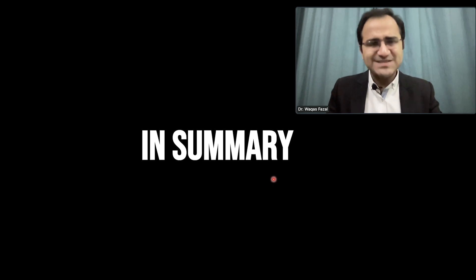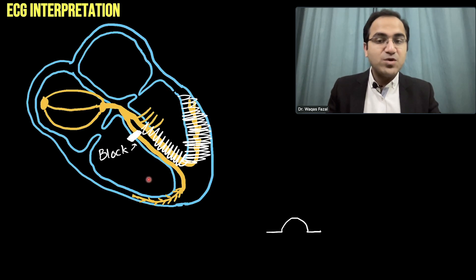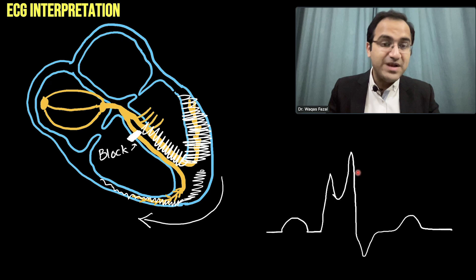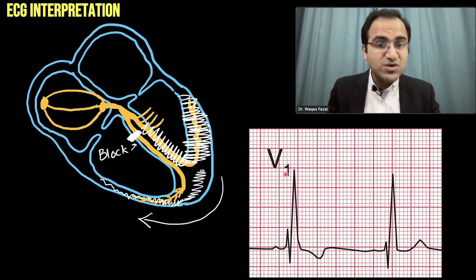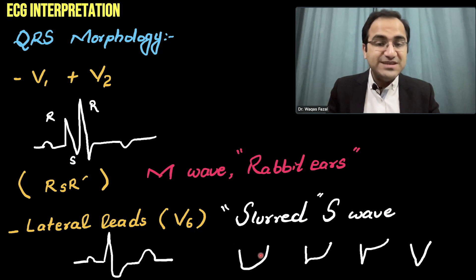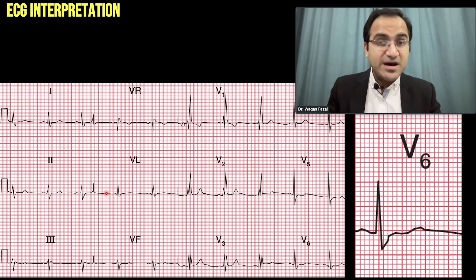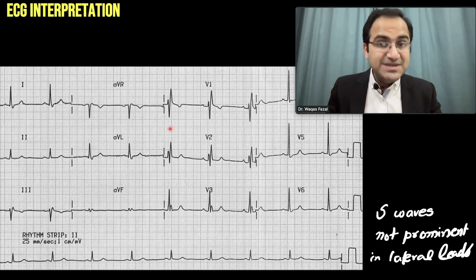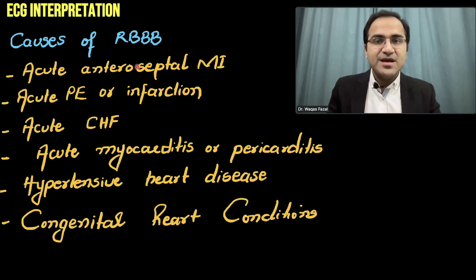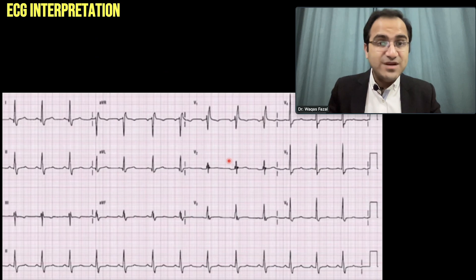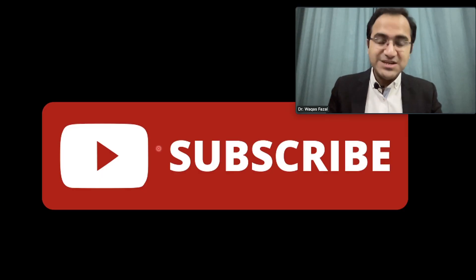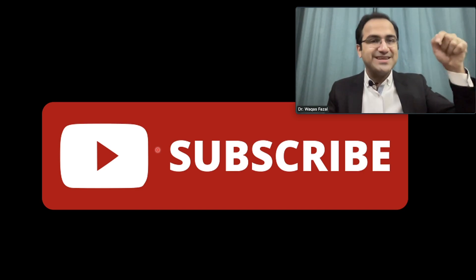Before going into the summary, if you liked my video please click the subscribe button and make sure to check out my other videos on ECG interpretation. In summary, we talked about what bundle branch block is, how the QRS complex forms an M wave, the appearance of the M wave in V1 and slurring of the S wave in V6, the causes of right bundle branch block, and we solved ECGs. Please check out my next video on left bundle branch block. Thank you very much.